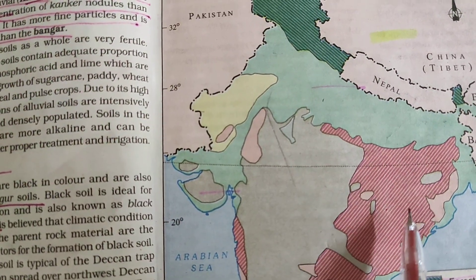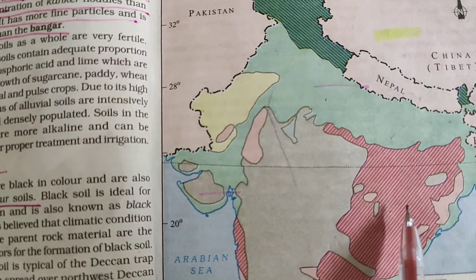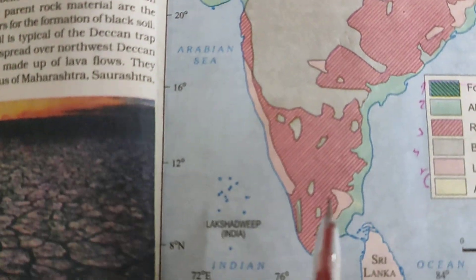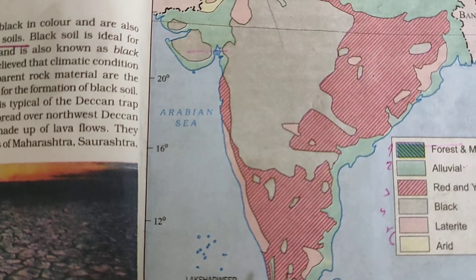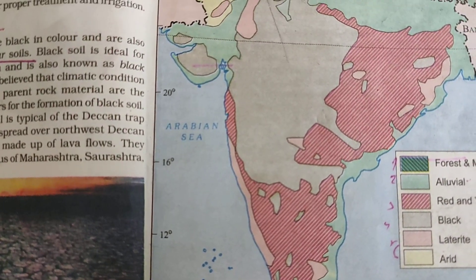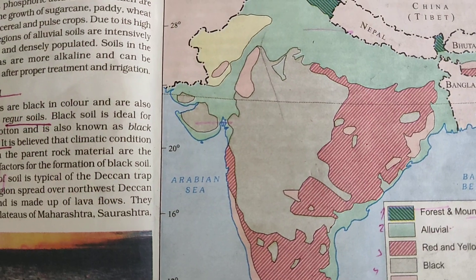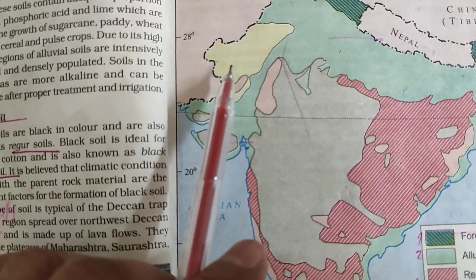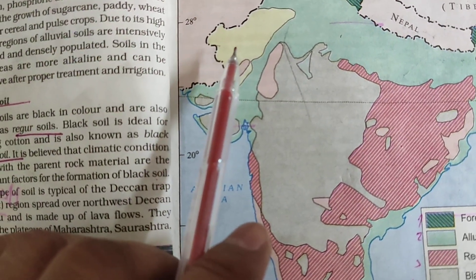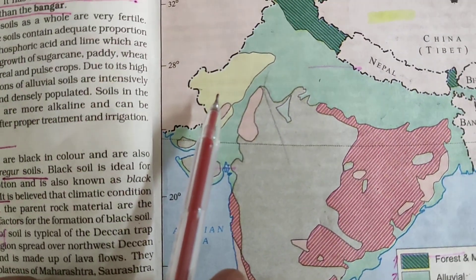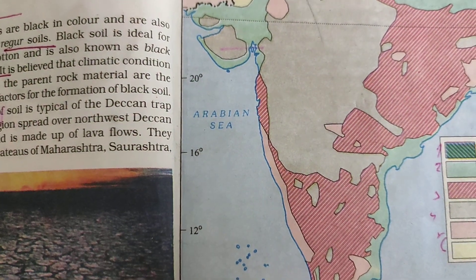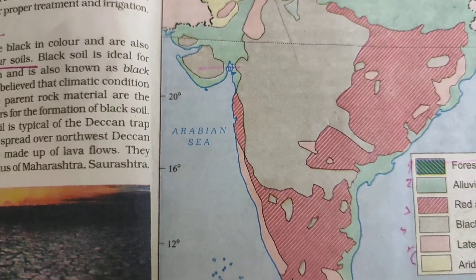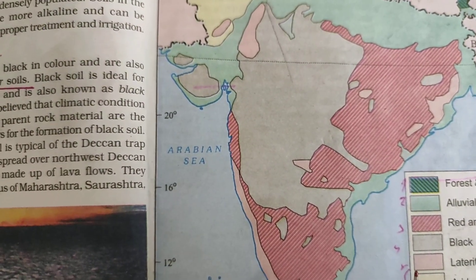Red soil is found on the eastern coast — you can see it in Chhattisgarh, Odisha, and in the south it is Tamil Nadu and some part of Kerala. Arid soil, shown in yellow, is in Rajasthan in the western part of India and it is not useful for any type of agriculture. Laterite soil is found on the coastal regions — on the eastern coast we have laterite soil and alluvial soil.